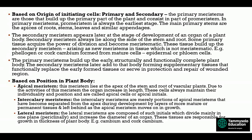Meristems based on position in the plant body: we have three types. Apical meristems lie at the apex of the stem and root of vascular plants; they are responsible for increasing the plant in length. These cells maintain their individuality and are called apical cells or apical initials. Intercalary meristems are portions of apical meristems that have become separated from the apex by layers of more mature tissue, left behind as the apical meristem moves on. Lateral meristems are composed of initials that divide mainly in one plane — periclinally — and increase the diameter of an organ, responsible for growth in thickness, e.g., cambium and cork cambium.